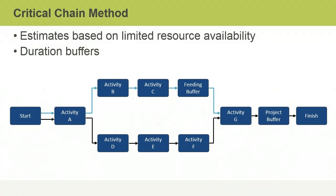In summary, the critical path method is used to calculate the minimum total project duration based on estimates of how long critical activities will take to complete. The critical chain method allows you to enter buffers to account for uncertainty.